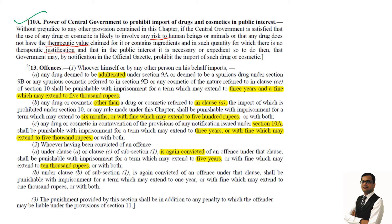Coming to the offenses and penalties — a person or someone acting on his behalf who is importing any drug deemed to be adulterated under section 9A, or deemed to be a spurious drug under section 9B, or any spurious cosmetic referred to in section 9D, or any cosmetic of the nature referred to in clause (ee) of section 10, shall be punishable with imprisonment for a term which may extend to 3 years and a fine which may extend to 5,000 rupees. This clause A is about adulterated drugs, spurious drugs and cosmetics.